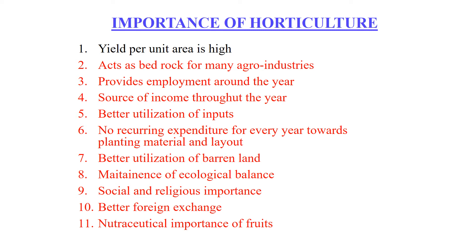As a source of income throughout the year, most vegetables and flowers are seasonal or annual, harvested within a short period and giving higher returns, while some fruits can give yield throughout the year. Better utilization of inputs such as land, labor, and other inputs can be achieved efficiently compared to agronomical crops. There is also no recurring expenditure every year towards planting material and layout, as horticultural crops are long-lived and perennial — once planted, they remain for years together.